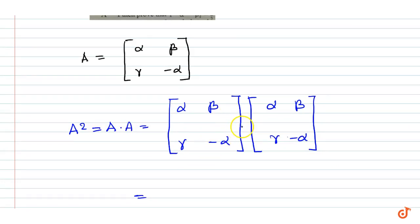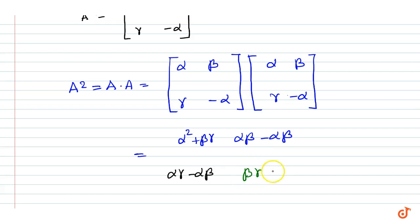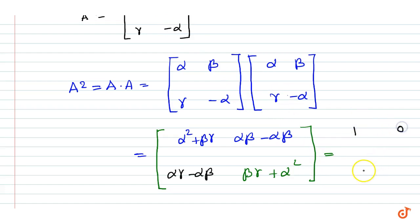Multiplying these two square matrices, we get [α² + βγ, αβ - αβ; αγ - αγ, βγ + α²], which is equal to the identity matrix, that is equal to [1, 0; 0, 1].